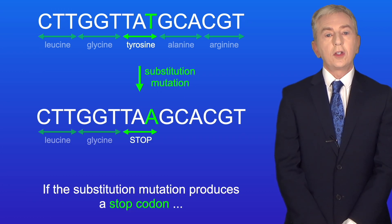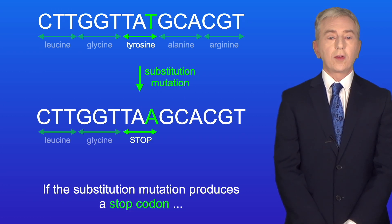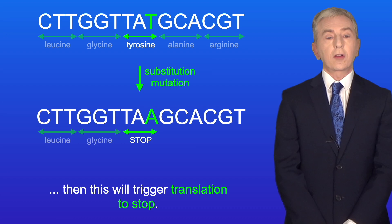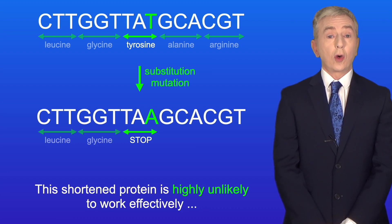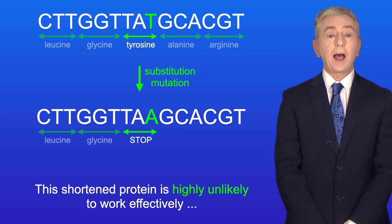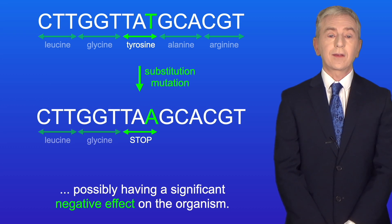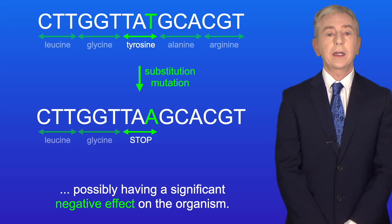Now, if this substitution mutation produces a stop codon, then this will trigger translation to stop. And this shortened protein is highly unlikely to work effectively, possibly having a significant negative effect on the organism.